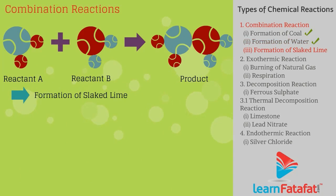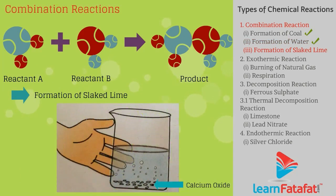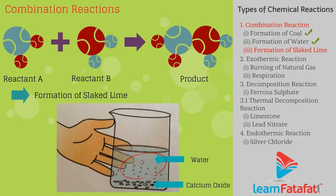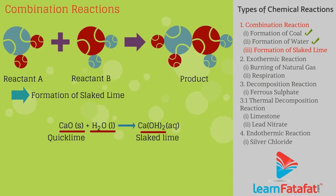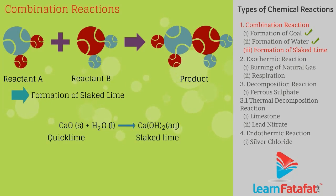Example three — formation of slaked lime: Take a small amount of calcium oxide (quick lime) in a beaker and slowly add water. Calcium oxide reacts vigorously with water to produce slaked lime, and a large amount of heat is evolved. Calcium oxide and water combine to form the single product calcium hydroxide: CaO + H2O → Ca(OH)2.